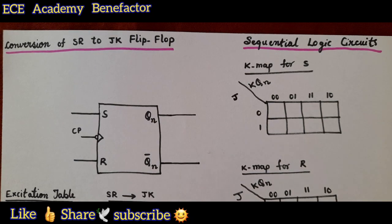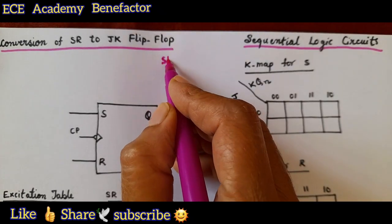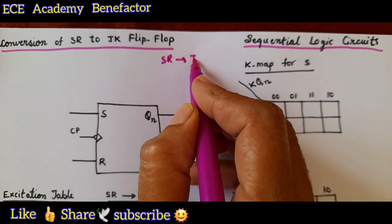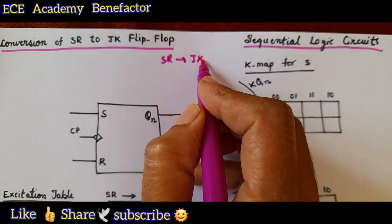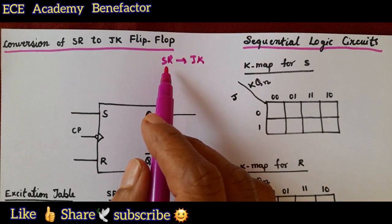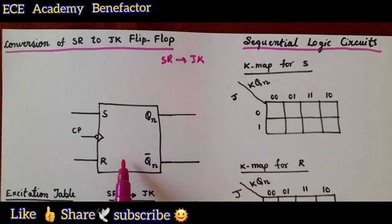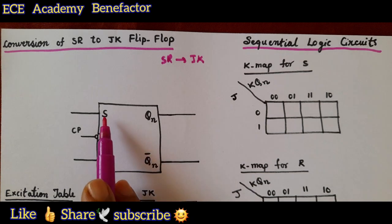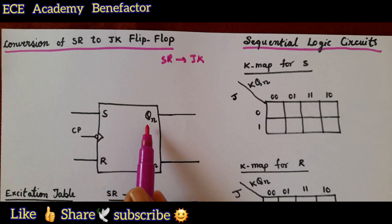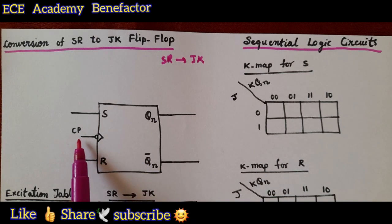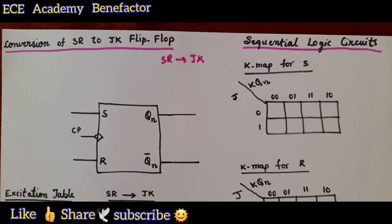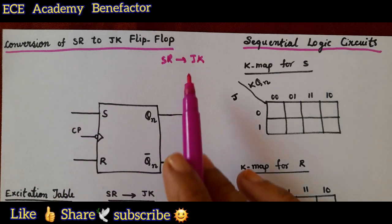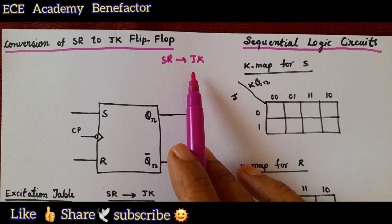We need to convert SR flip flop to JK flip flop. The SR flip flop is given to us — this is its logic diagram having inputs S and R, Qn and Qn bar are the outputs, and Cp is the clock pulse, negatively edge-triggered. Now we need to convert this SR flip flop to JK flip flop.